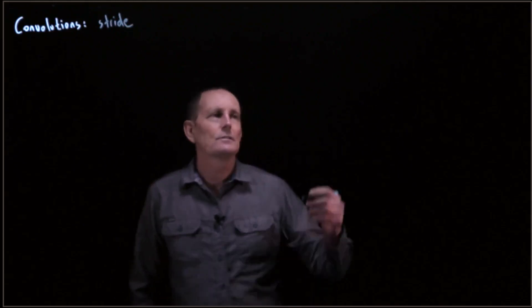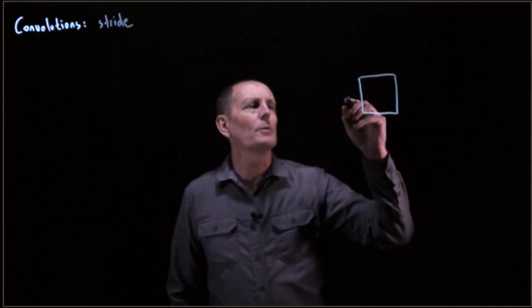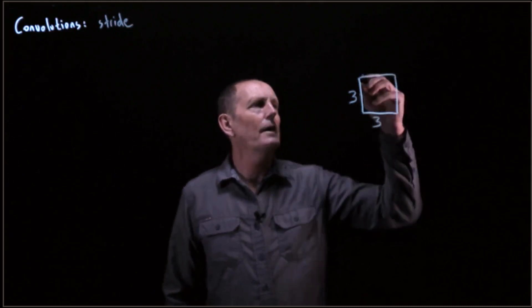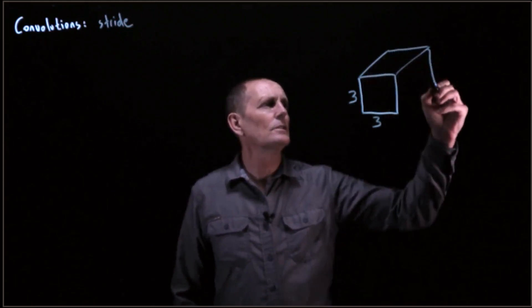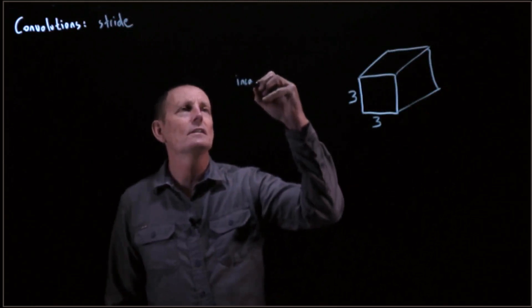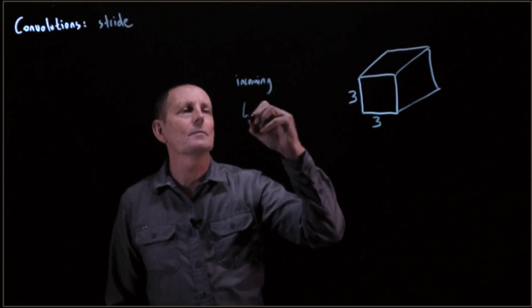We've talked about convolutions and the size of convolutions. We might have a 3 by 3 convolution, and the depth of this convolution is going to match the depth of the incoming tensor.